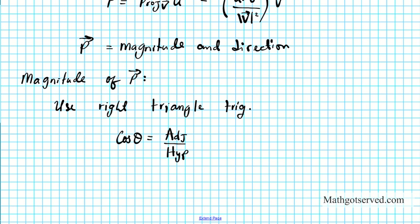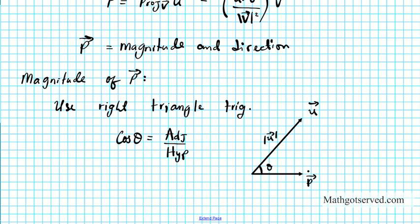Let's go ahead and construct a triangle. We have vector u here, and then this is the component in this direction — this is vector p, which is what we constructed above. We know that vector v is somewhere here, but this is the component of u projected right on top of vector v. Let's say the angle between these two is theta. The length of this side is the magnitude of u, and the length of this side is the magnitude of p. So we've created a right triangle. This is my hypotenuse, and this is my adjacent. Using the connection that cosine is adjacent over hypotenuse, we know that cosine theta equals the magnitude of vector p divided by the magnitude of vector u.